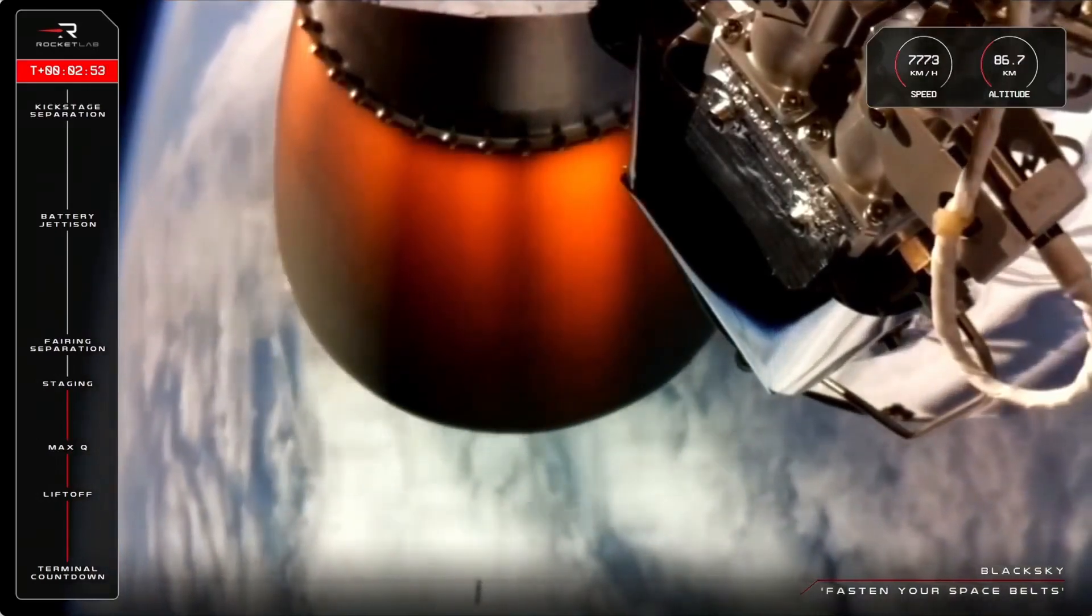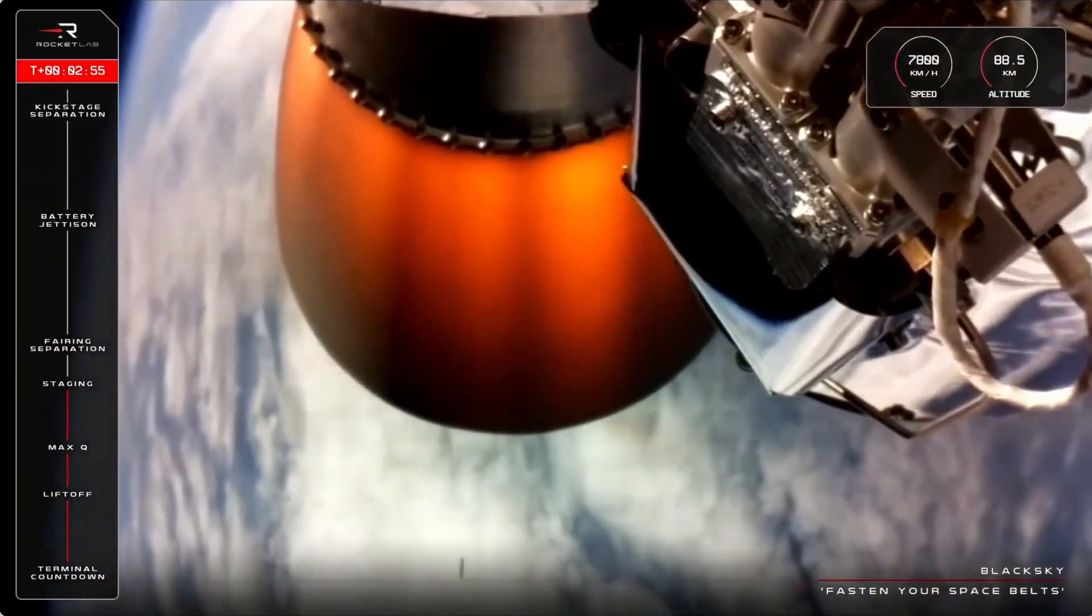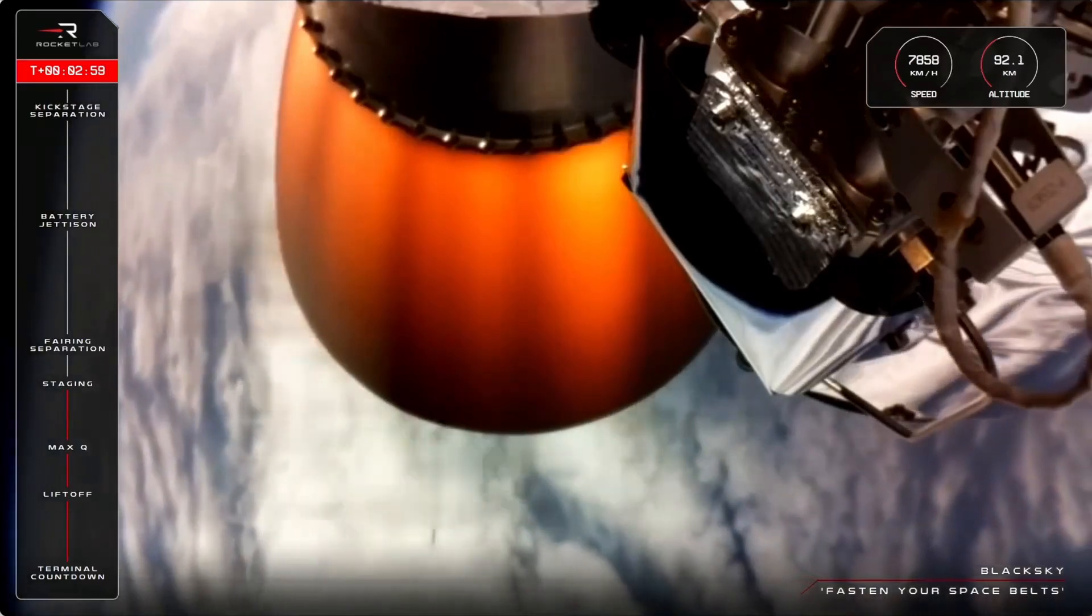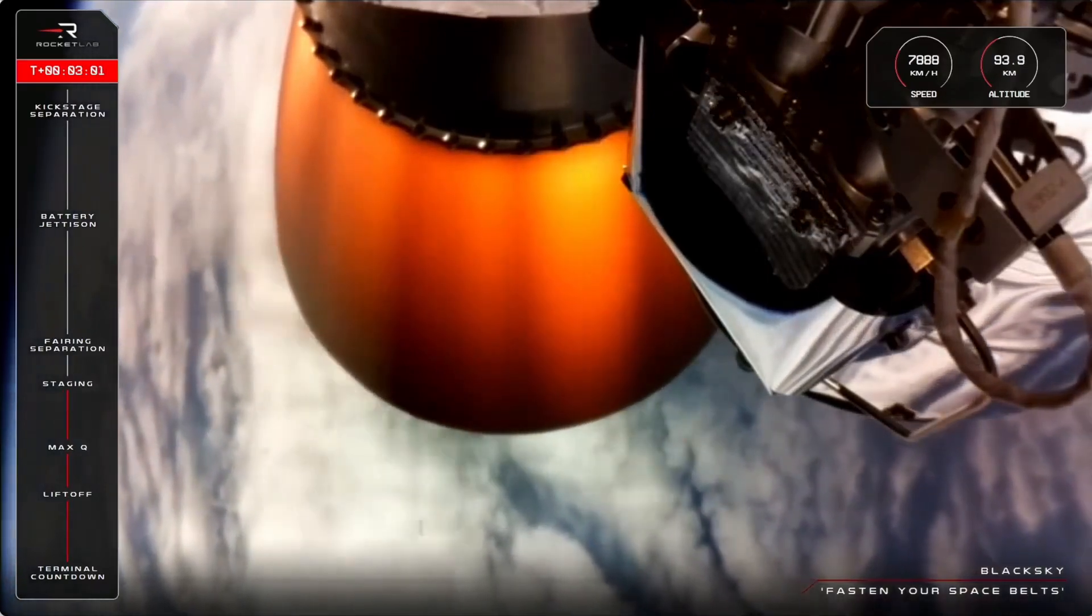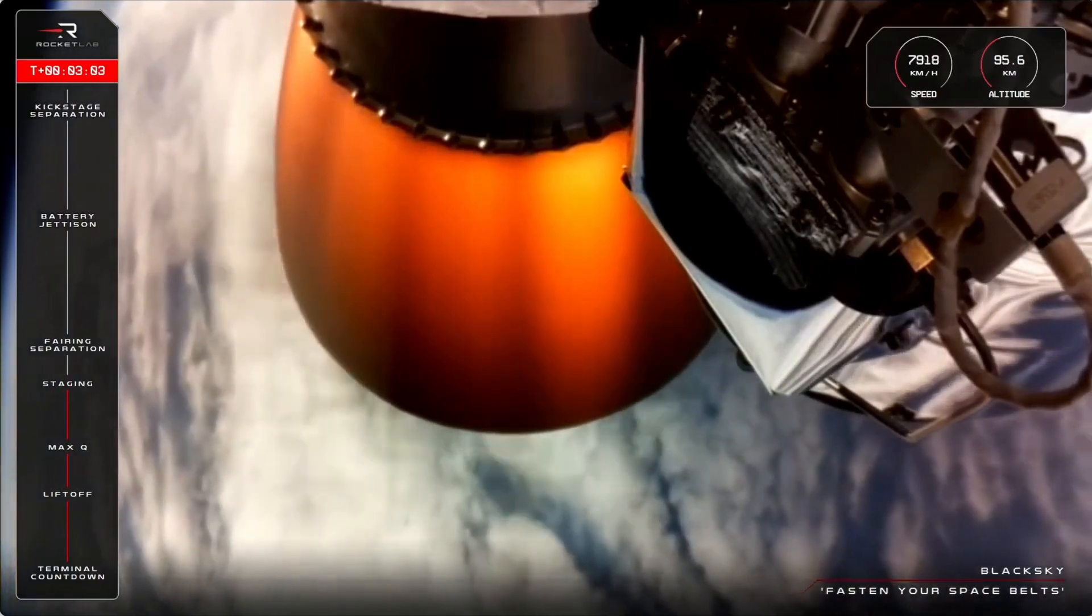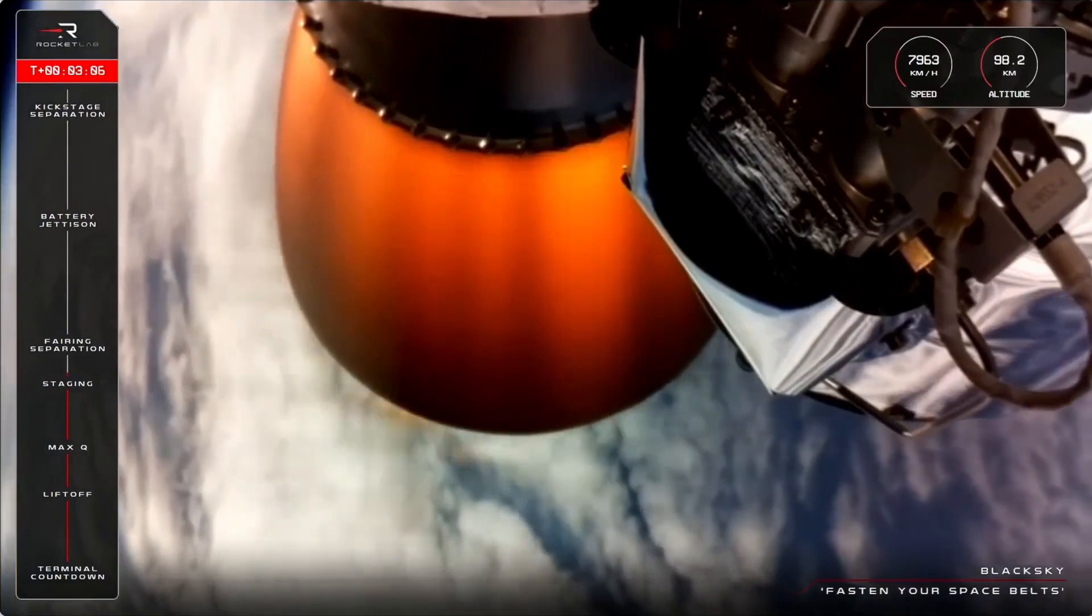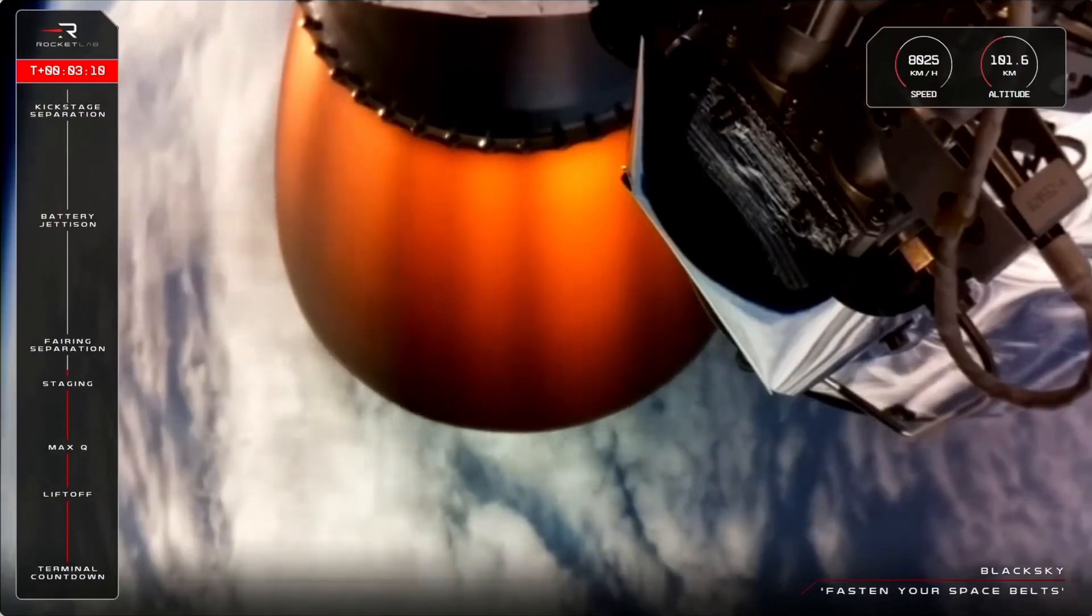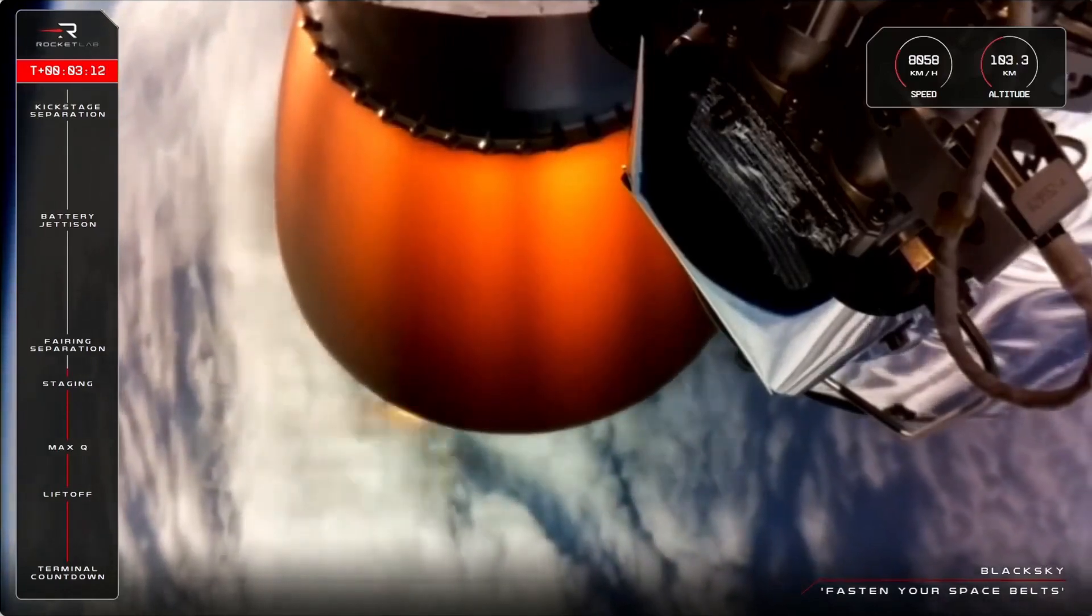And that is exactly what we wanted. MECO, Stage Separation and 2nd Stage Ignition all performed flawlessly on Electron's 60th flight. The rocket's second stage fired up healthy and is now continuing well on its way to orbit with Black Sky's Gen 3 payload, travelling now at more than 8,000 kilometres per hour.